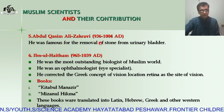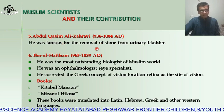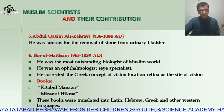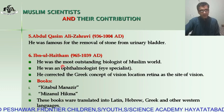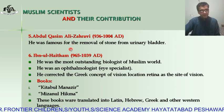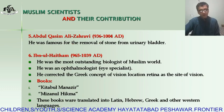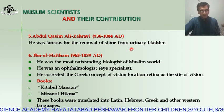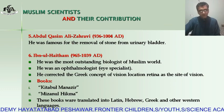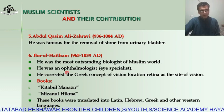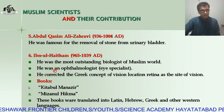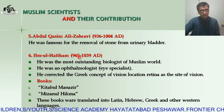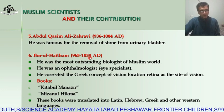The next scientist is Abdul Qasim al-Zahravi, 936 to 1004 AD. He was famous for the removal of stones from the urinary bladder — for the first time, he performed this procedure. The next scientist is Ibn al-Haytham, 965 to 1039 AD.